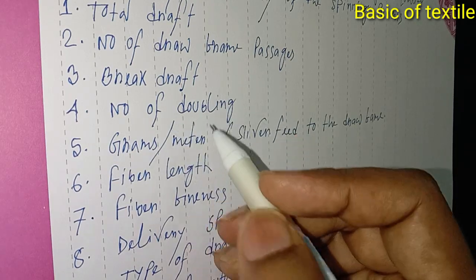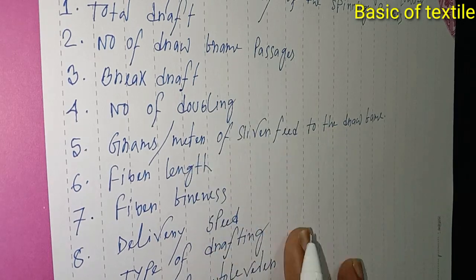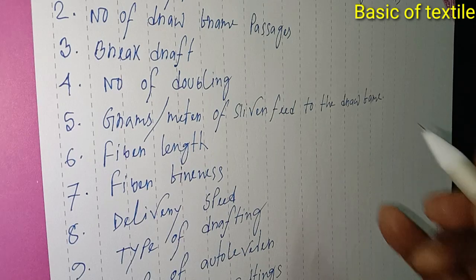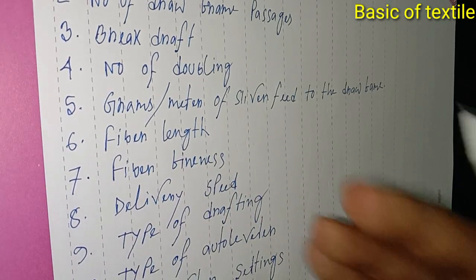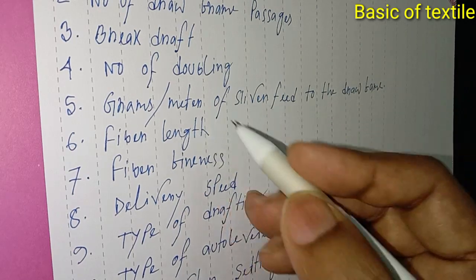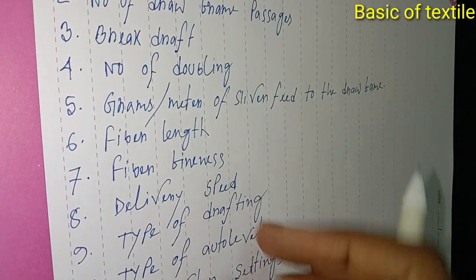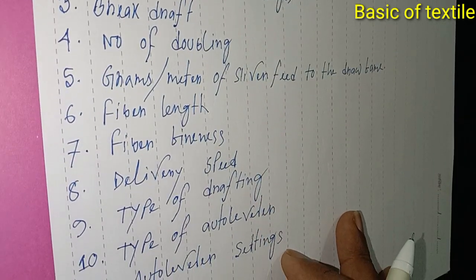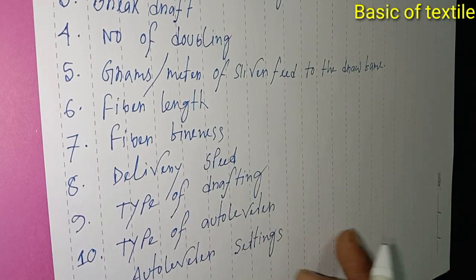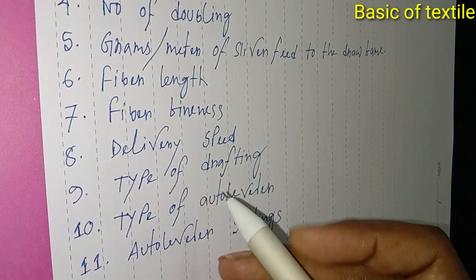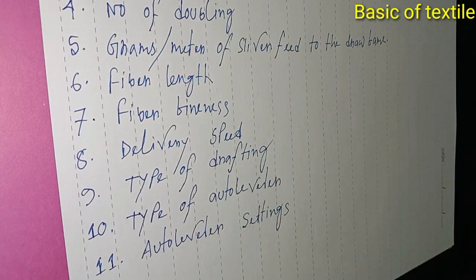To recap: doubling, grams per meter of sliver fed to the draw frame, fiber length, fiber fineness, delivery speed, type of drafting, type of auto leveler, and auto leveler setting are all key factors affecting draw frame output and quality.